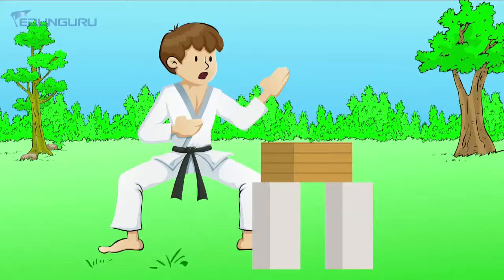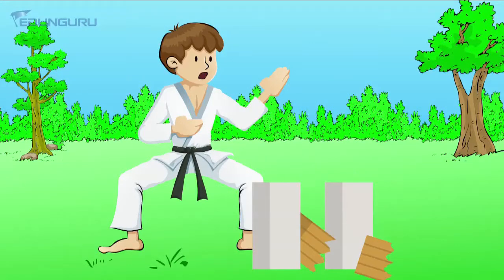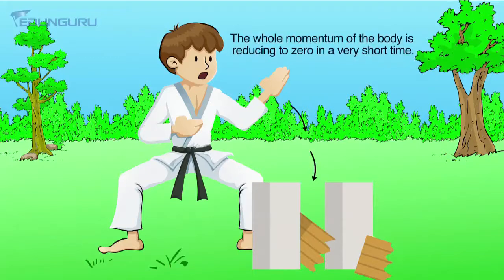The last example — a karate player can break a pile of wood with a single stroke. How does this happen? He applies all the force at one instant, so the whole momentum of the body reduces to zero in a very short time. That means a very large force acts on the body in a very short span of time, and this much force can easily break the pile. That is why a karate player can break.